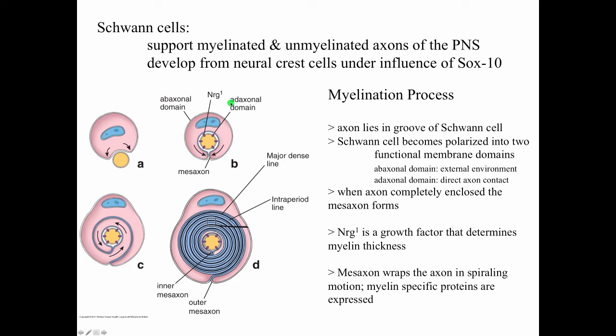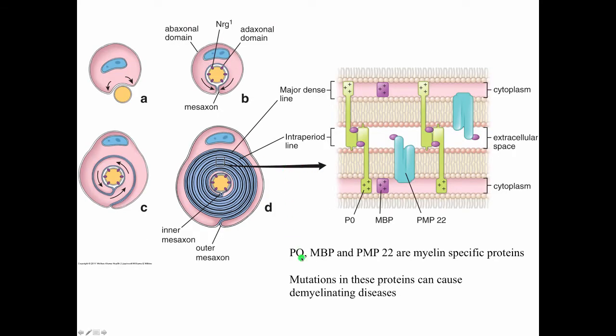The molecule NRG1 is a growth factor that helps determine how thick a myelin sheath will be within myelinated axons. Myelination is created as the mesaxon wraps around the axon in a spiraling motion, and as it does that, myelin-specific proteins get expressed, such as POMBP and PMP22.